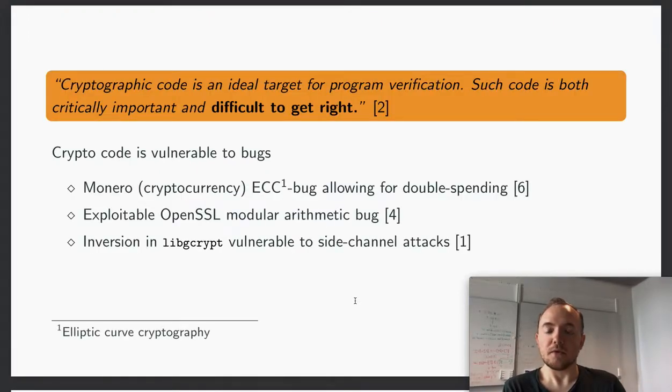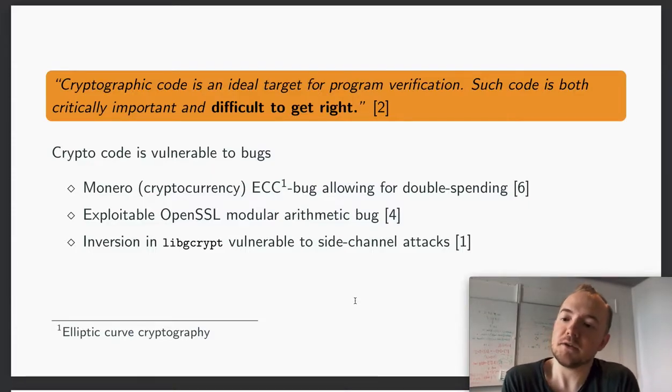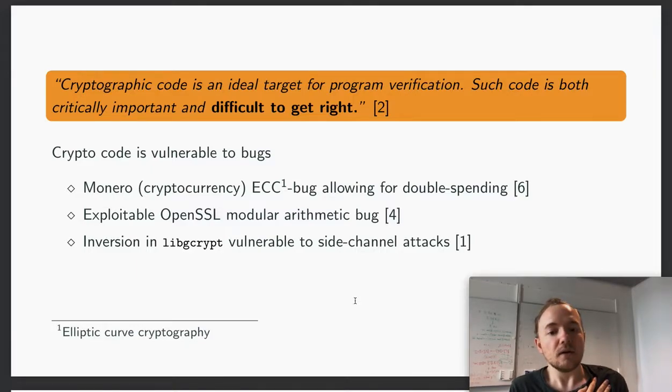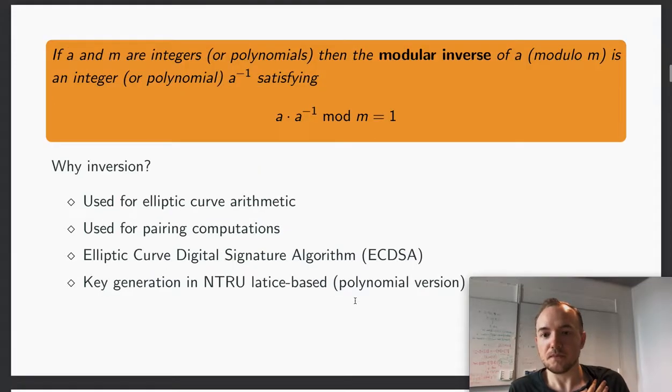First of all, cryptographic code is difficult to get right and it's therefore an ideal target for formal verification. Crypto code is also vulnerable to bugs, particularly in the context of blockchains and cryptocurrencies. In particular, the algorithm that we formalized, inversion, has also been discovered to be vulnerable in crypto libraries that are used in the industry.